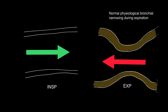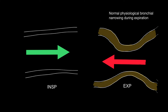During inspiration — indicated by the green arrow — air comes in and the bronchus dilates. But during expiration, the bronchial walls get closer together and the diameter of the bronchus reduces. This is a normal physiological response.